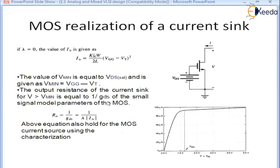Let's see the MOS realization of a current sink. In this configuration, gate and source are both connected together, and we know that this transistor will work in saturation region when the channel length modulation effect lambda is zero.